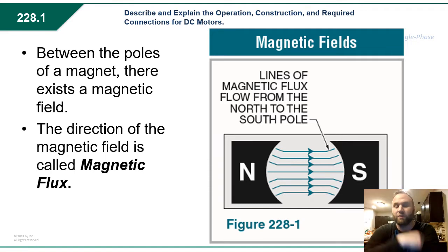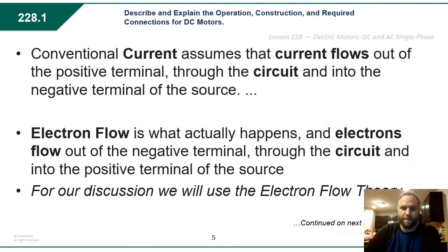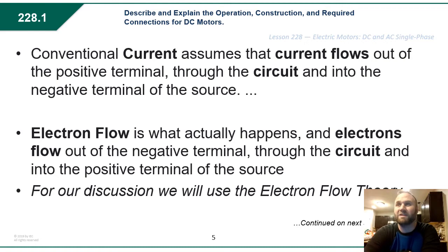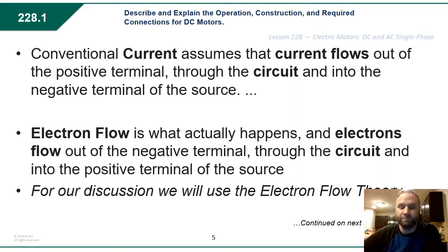The direction of this magnetic field — the magnetic lines of flux — run from north to south, as shown in the drawing. Conventional current assumes that current flows out of the positive terminal through the circuit into the negative terminal of the source. That's been the accepted constant for many years. Electron flow is actually what happens — electrons flow out of the negative terminal through the circuit into the positive terminal of the source. For all of our discussion, we're going to talk about the electron flow theory, not the conventional current theory.